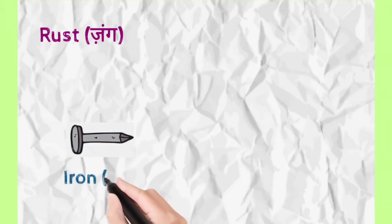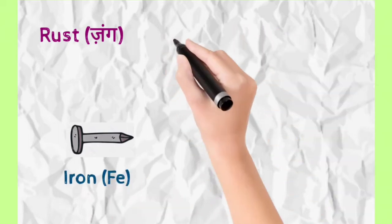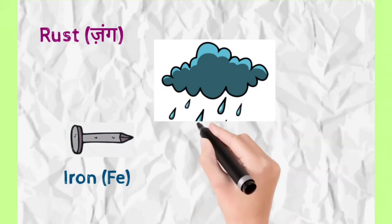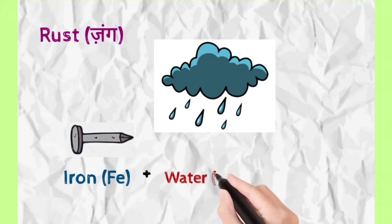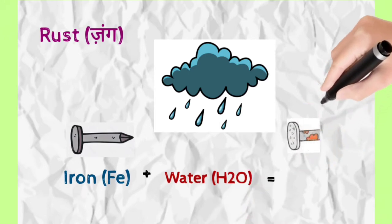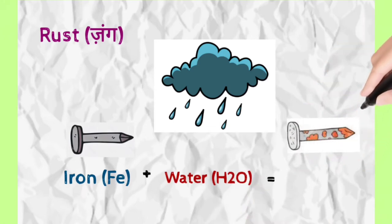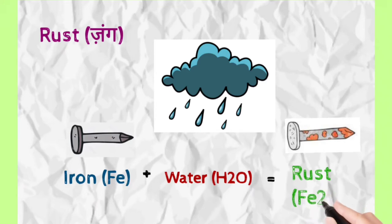We denote iron in the language of chemistry as Fe. When water - H2O in chemistry - is used on iron for a long time, we get rust, or iron oxide, Fe2O3.